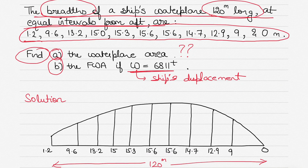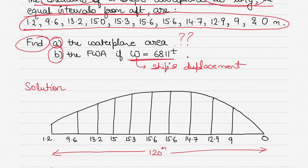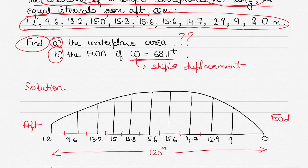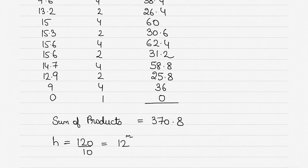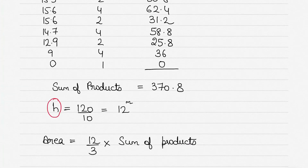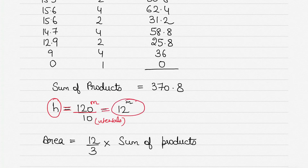What I normally do with these questions is draw a simple diagram and label the ordinates — starting from aft going forward — all 11 ordinates labeled. The drawing is not to scale; it's just for understanding. This also helps me count the number of intervals: 1, 2, 3, 4, 5, 6, 7, 8, 9, 10. So there are 10 intervals. Then I can calculate something called 'h': h = ship's water plane length ÷ number of ordinate intervals = 120 ÷ 10 = 12 meters.